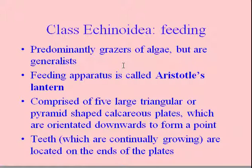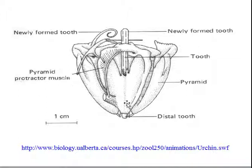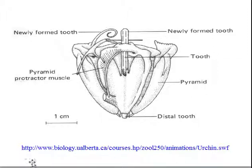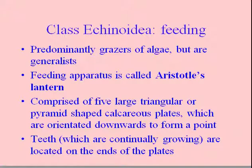The feeding apparatus is called the Aristotle's lantern — that's the part in the middle you may have seen when cracking open a kina. It has a five-sided tooth, and one trick for getting kina spines out of your skin is to use one of those teeth like a splinter tool — it's sharp enough. There's an animation available online showing how the Aristotle's lantern works. It's a five-sided chewing apparatus unique to urchins.